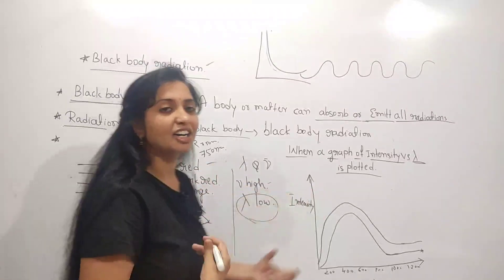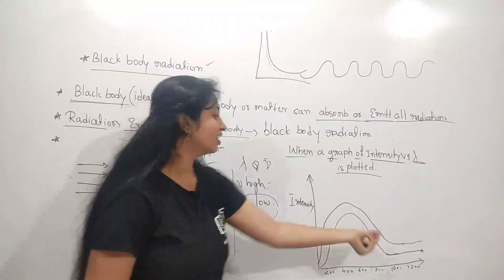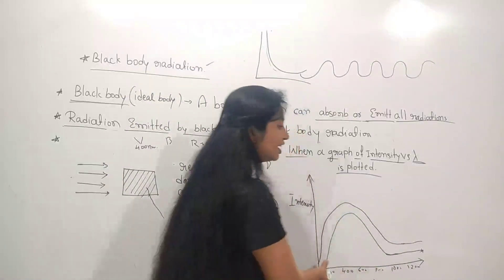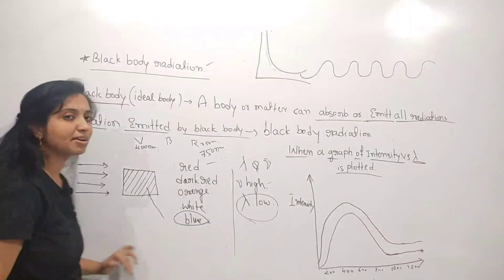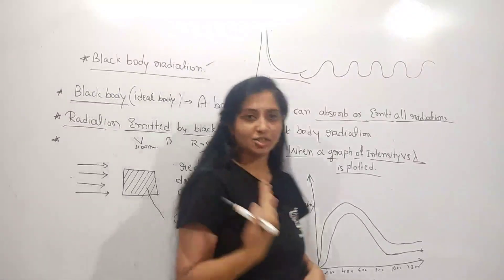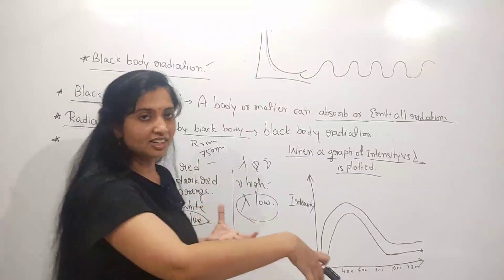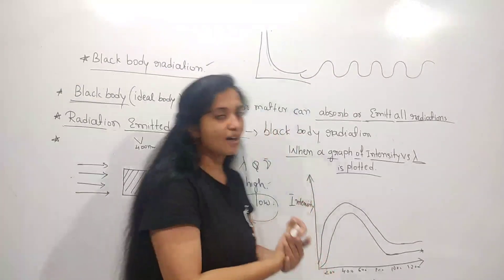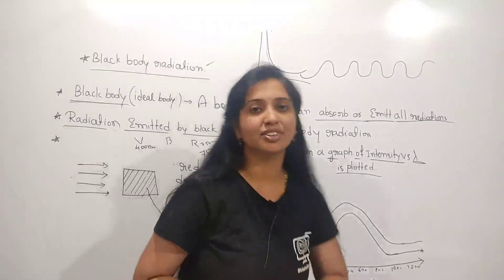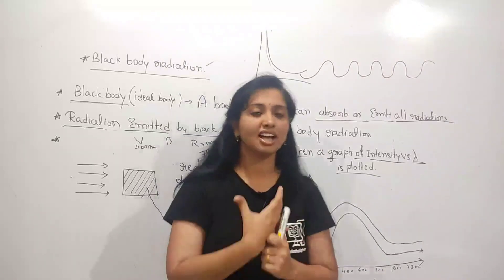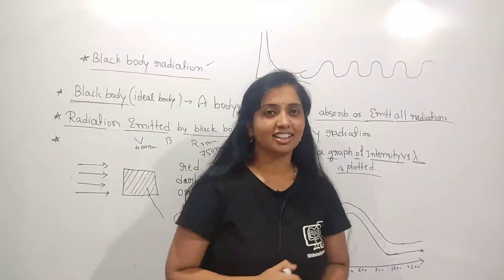So this is all about black body radiation. By this experiment we know that when electromagnetic radiation is emitted from an object, it is in particle nature, discontinuous in manner, and quantized. In the next class I will come with the photoelectric effect experiment, which also shows that electromagnetic radiation acts like a particle in nature.